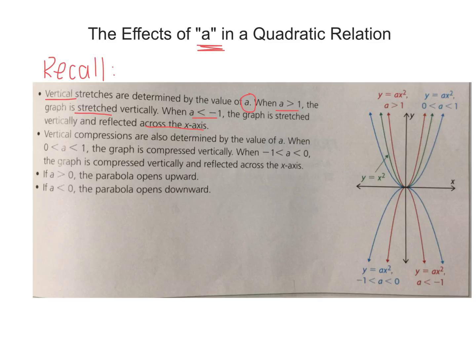Sketch an example of each of these properties. Vertical compressions are also determined by the value of A. When A is between 0 and 1, the graph is compressed vertically. If A is between 0 and negative 1, it's still compressed vertically but reflected across the x-axis. Sketch an example of each of these.